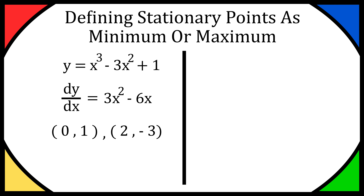Hey everyone, so today we're going to be defining stationary points as minimum or maximum. In my previous video I found the stationary points of the curve y equals x cubed minus 3x squared plus 1 — I'll leave that link down below. So I've kept dy over dx, which equals 3x squared minus 6x, and our two stationary points are (0, 1) and (2, −3). To work out whether these are minimum or maximum, we need to differentiate again to get d²y over dx². Differentiating 3x squared minus 6x gives us 6x minus 6.